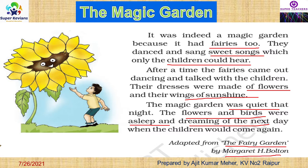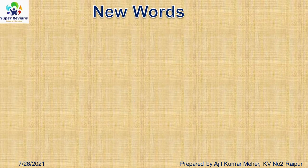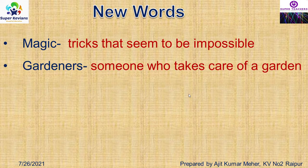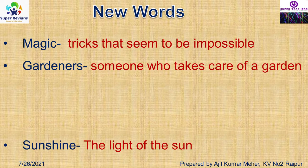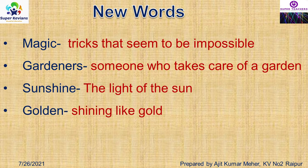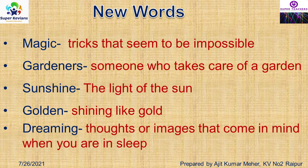Now we will move to the new words section. Magic means a trick that seemed to be impossible. Gardeners means someone who takes care of a garden. Sunshine means the light of the sun. Golden means shining like gold. Dreaming means thoughts or images that come to mind when you are asleep — whatever stories or images come to our mind during sleep is called a dream.